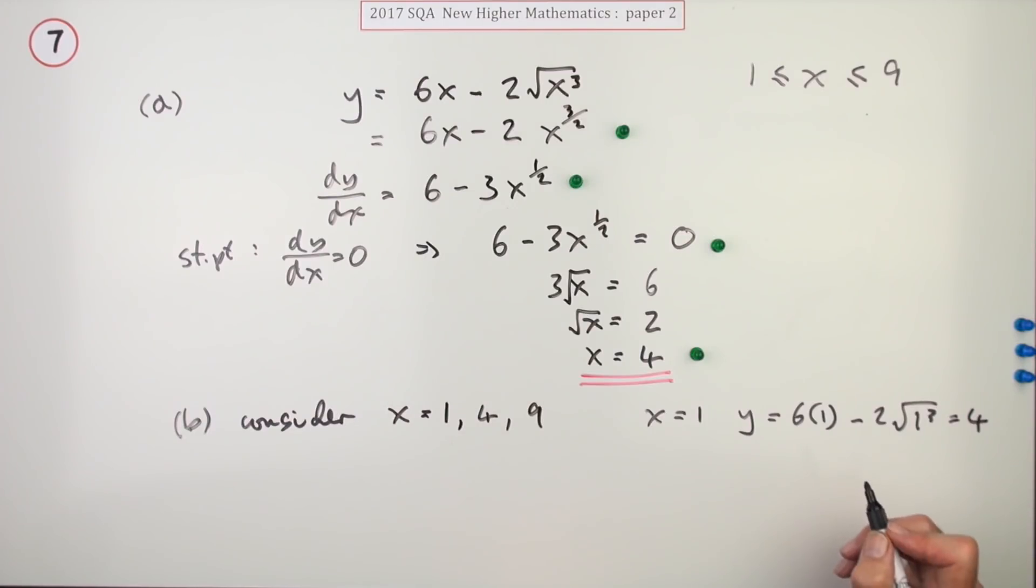x equals 4, y equals 6 times 4 minus 2 times the square root of four cubed. Now you could put that into a calculator. Remember you can do those in any order, the square root and the cube. So that would actually be better done as the square root of four is 2, cube it is 8, that comes to 16, and 24 minus 16 is 8. Well that's now taken first place. That could still win as the lowest though.